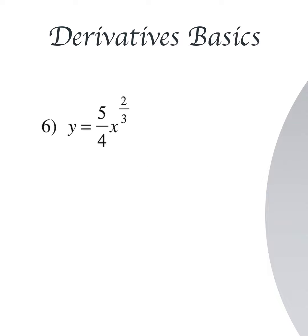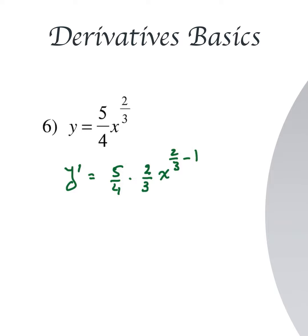Similarly, y prime equals: keep 5/4 and drop down 2/3. We multiply 5/4 times 2/3, giving x to the power (2/3 minus 1). So that's 10/12, which we simplify — divide by 2 — to get 5/6. And x to the power 2/3 minus 1 is negative 1/3. Since we have a negative power, we can write this as 5/6 x to the power minus 1/3.